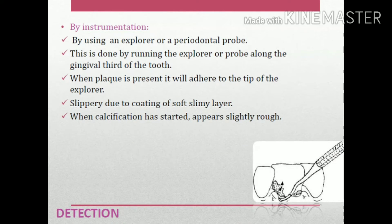Plaque can also be detected with instrumentation using an explorer or periodontal probe. Running the probe tip along the gingival third of the tooth — when plaque is present it will adhere to the tip of the explorer. It feels slippery due to its soft, slimy coating. When calcification has started, forming calculus, it appears slightly rough.